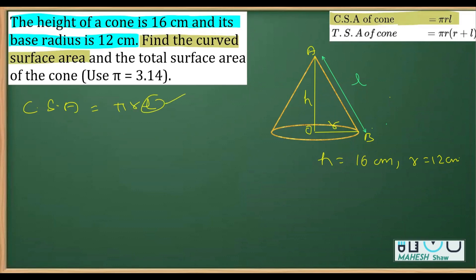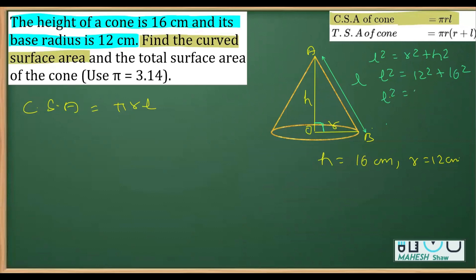To find the curved surface area we need l. Since the angle at the base center is 90°, we use l² = r² + h². So l² = 12² + 16² = 144 + 256 = 400. Therefore l = 20 centimeters.